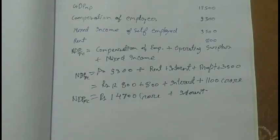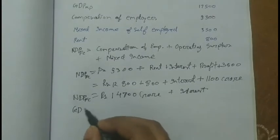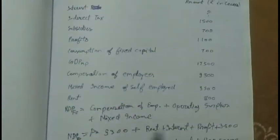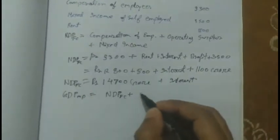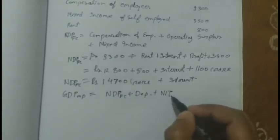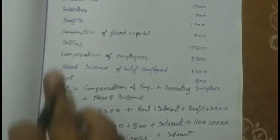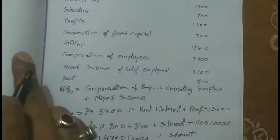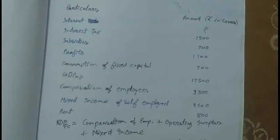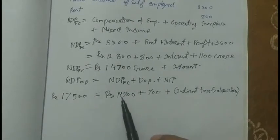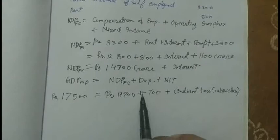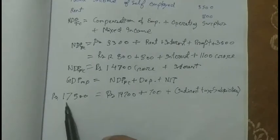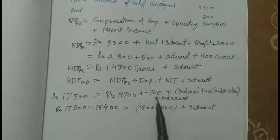In the question GDPMP is given, so to convert NDPFC into GDPMP we have to add depreciation and NIT. Depreciation means consumption of fixed capital, which is 700. NIT — net indirect tax — is the difference between indirect tax and subsidy. So GDPMP equals NDPFC plus depreciation 600 plus NIT (indirect tax minus subsidy). These are added to the left side, and interest will also be added here.